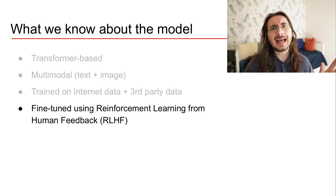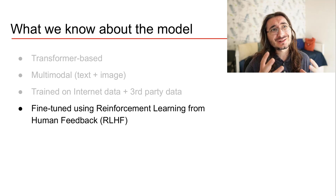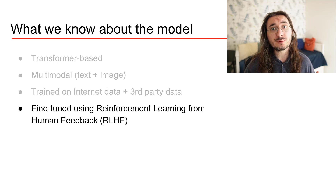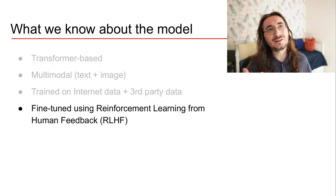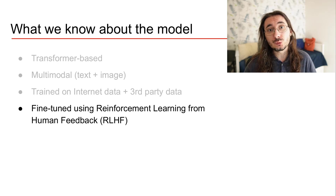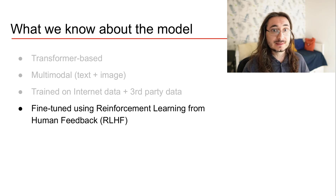Reinforcement learning from human feedback is a variation of reinforcement learning where the human is in the loop, responsible for providing feedback, rewards, and penalties to the model so that it can encapsulate human insight and instructions more directly. This technique has been used with a lot of success in ChatGPT, and it is a variant of something used before with more traditional AI techniques, namely genetic algorithms — specifically a variant called interactive generative algorithms, where the fitness function is a person providing direct feedback to the system.